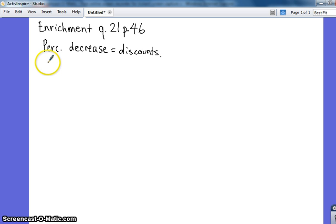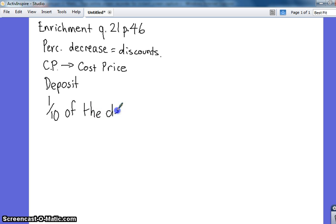After the cash deposit is paid, so something, an item will have a cost price. And part of paying for that is to pay a deposit up front. And the amount that remains to be paid is discounted by a percentage that is one tenth of the deposit. One tenth of the deposit. And so we know in maths what that means, and we know what that looks like.